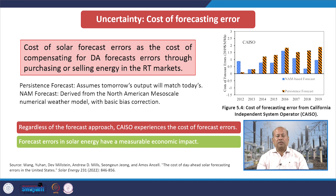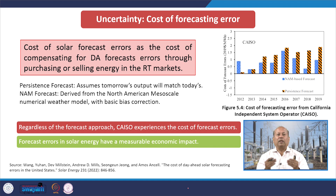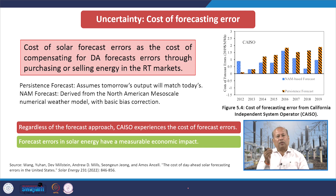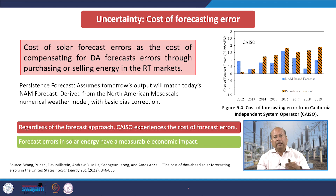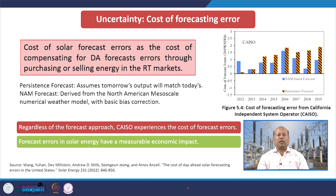What are the challenges due to forecasting issues? The cost of forecasting error: if we connect a 3 megawatt PV plant and expect 2.5 megawatt at a given point of time but it is not happening, how does it cost? The cost of solar forecast error is the cost of compensating for the day-ahead forecast error through purchasing or selling energy in the real-time market.